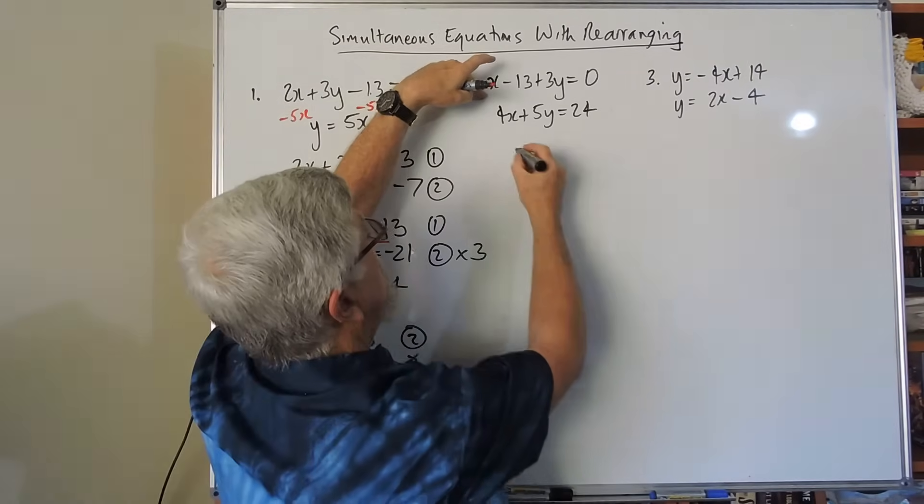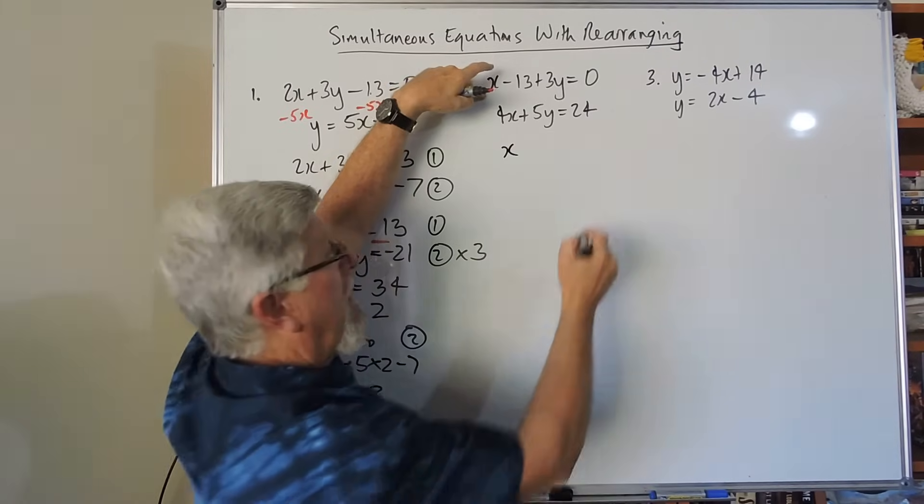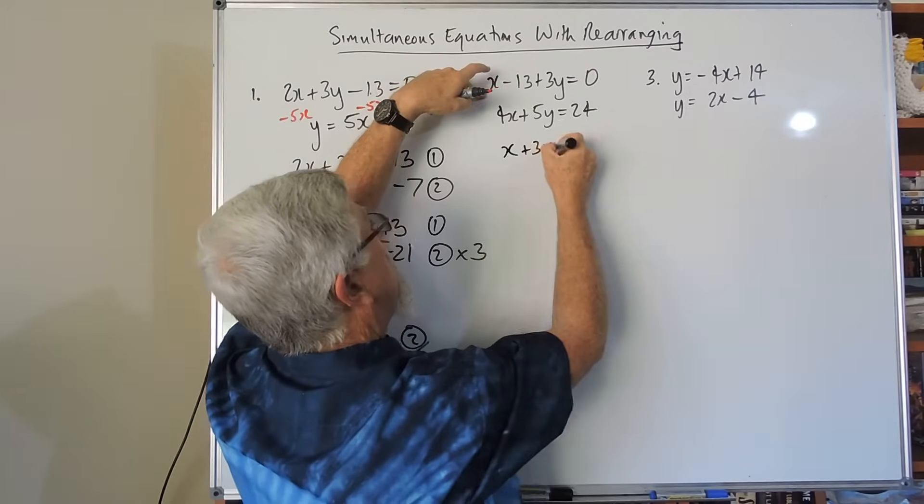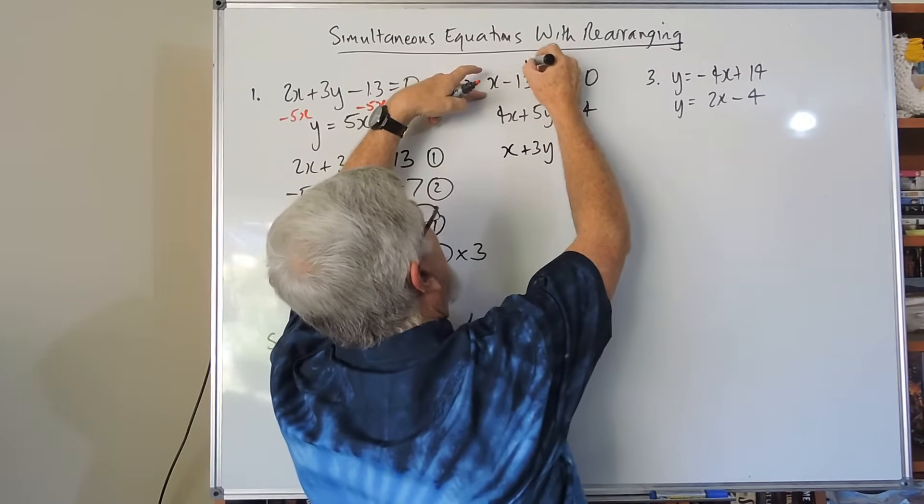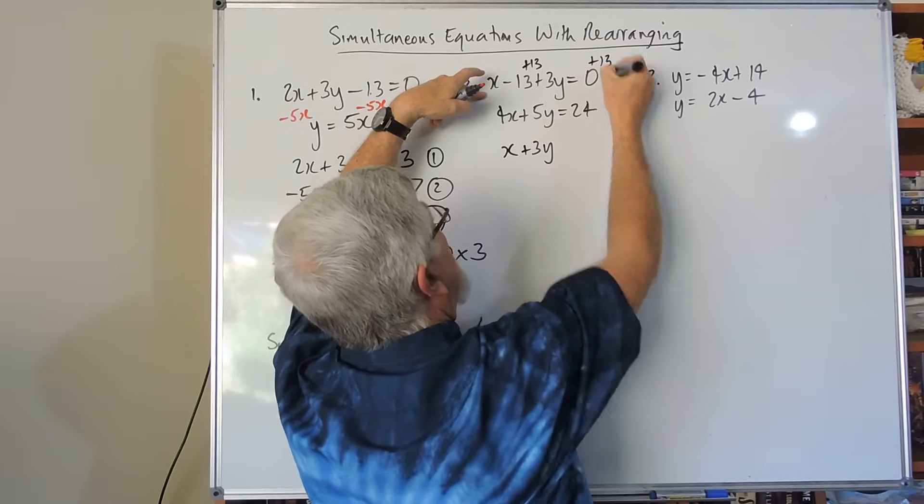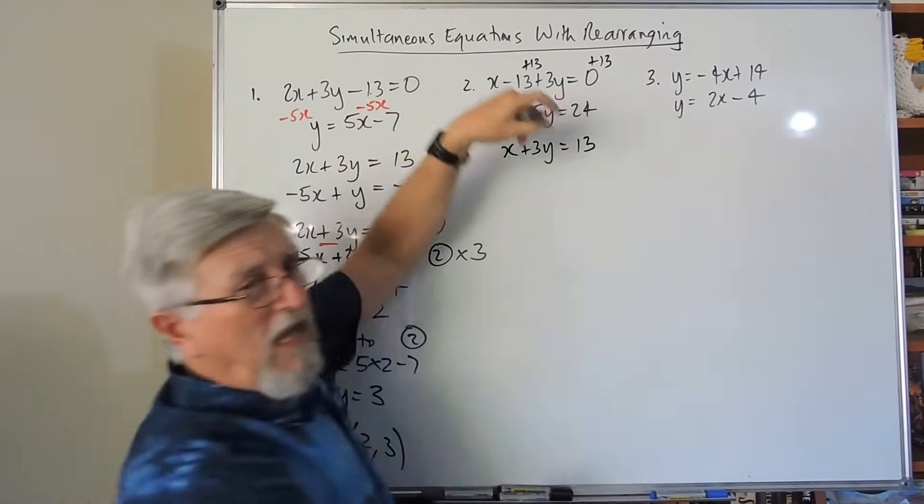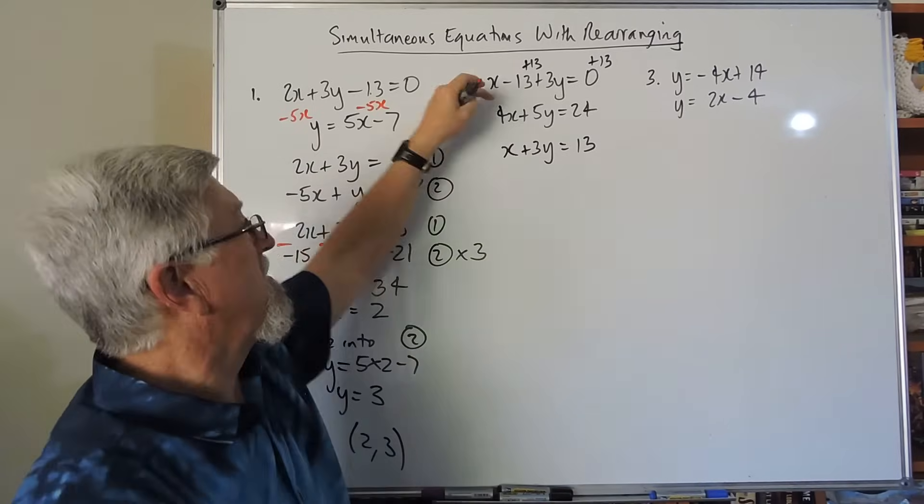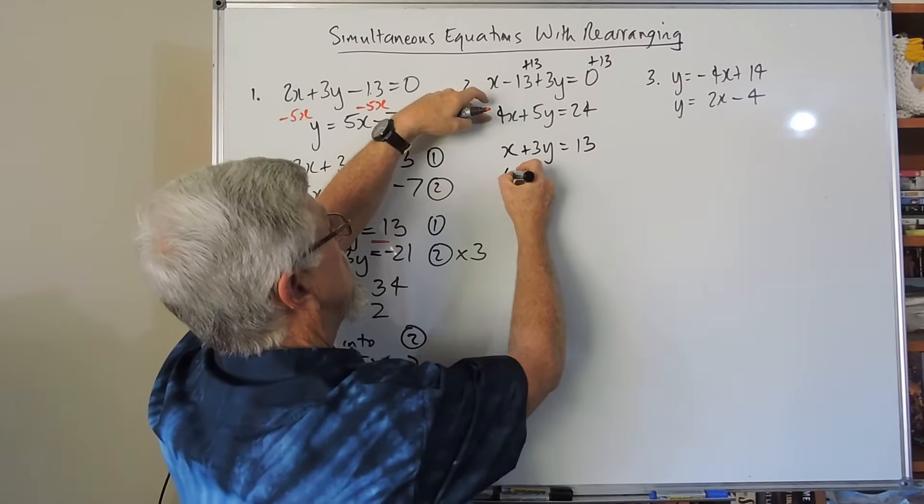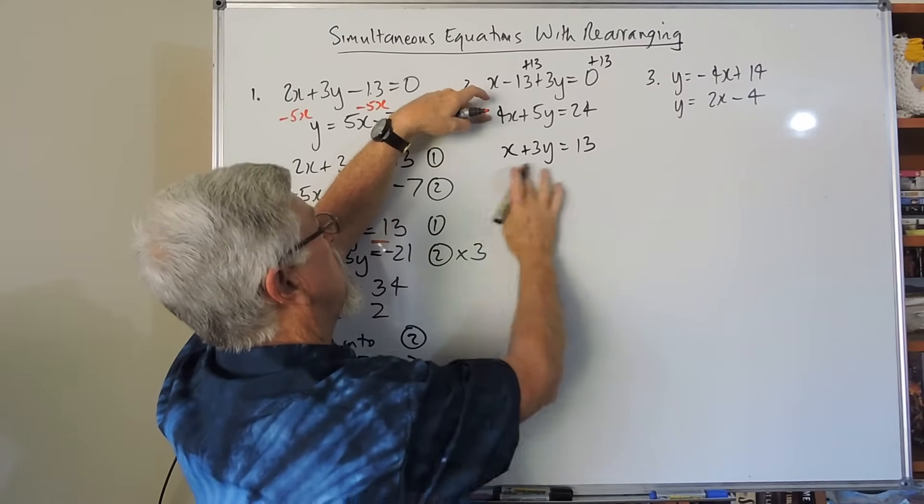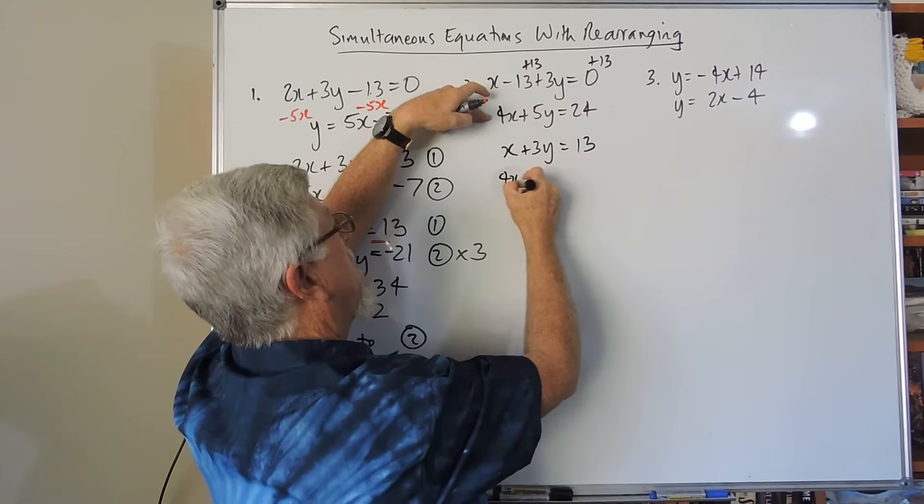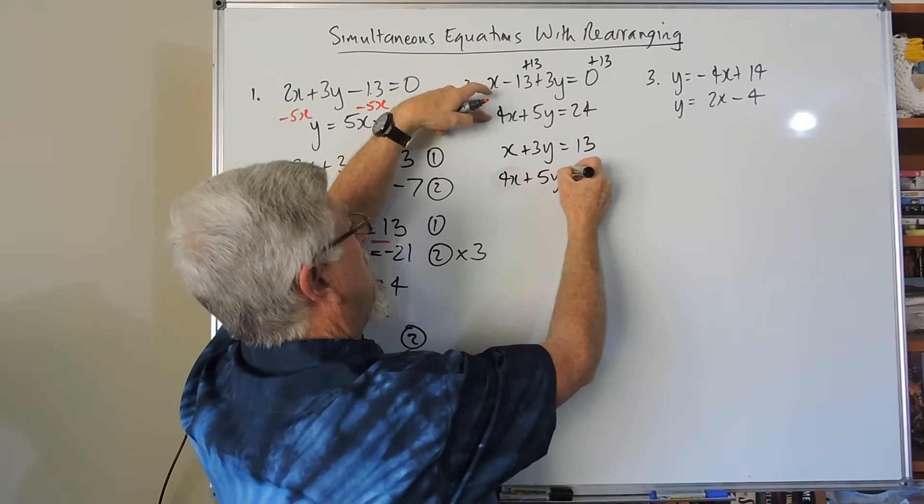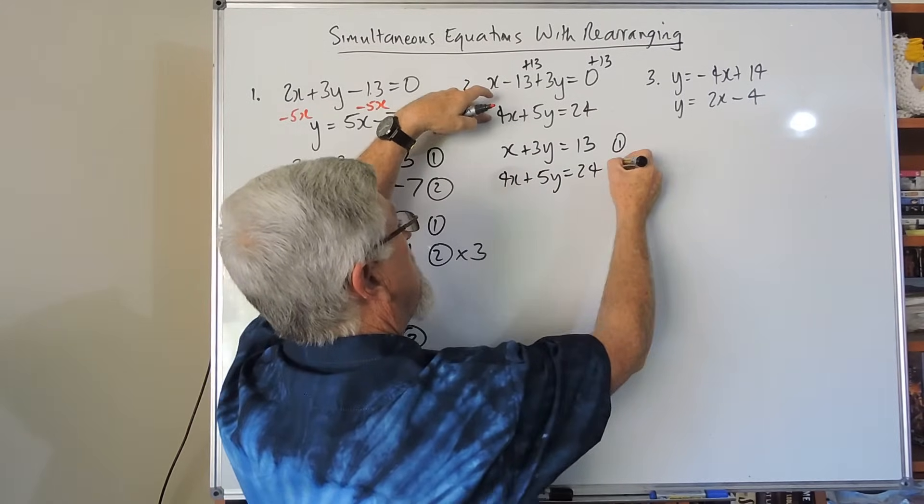This one, I've got the x first. That's okay. I'm going to write plus the 3y and the minus 13, if I go plus 13 to each side, has equal 13. So I'm tending to go letter, letter, equals, and then the constant by itself. This one here, well, that was good because it's already in the correct form. So I can just go, there's a 4x, there's a 5y, and there's a 24. So there's my 1, and there's my 2.